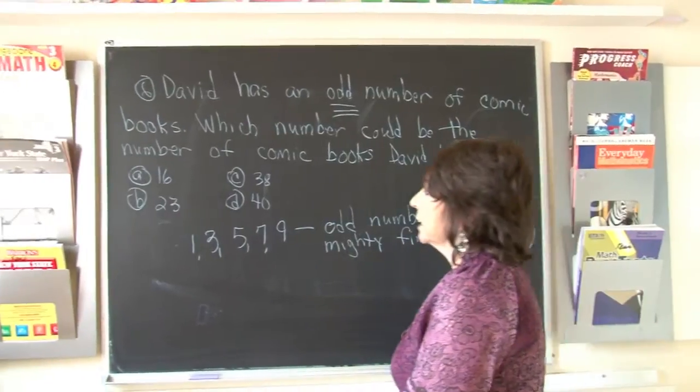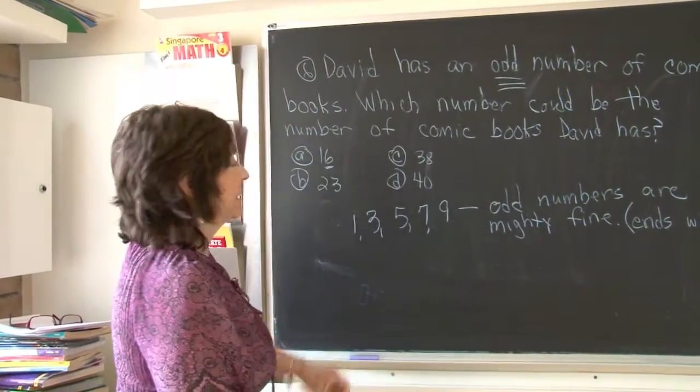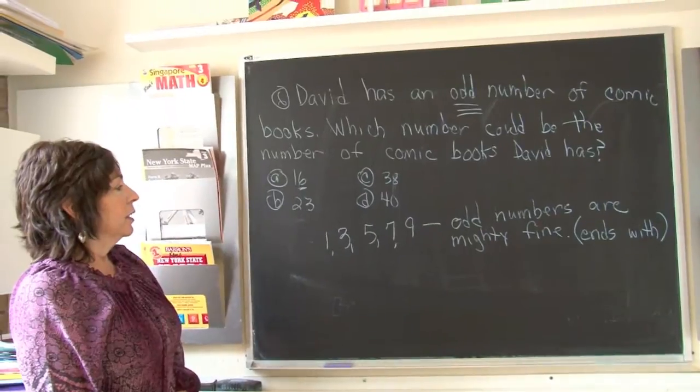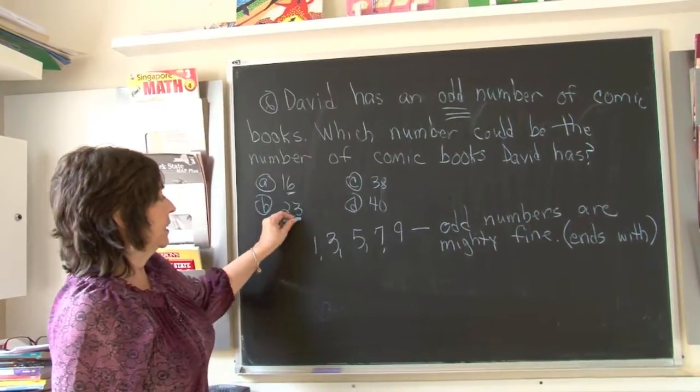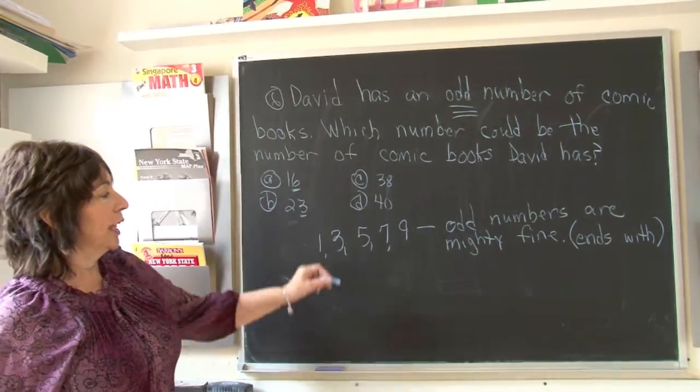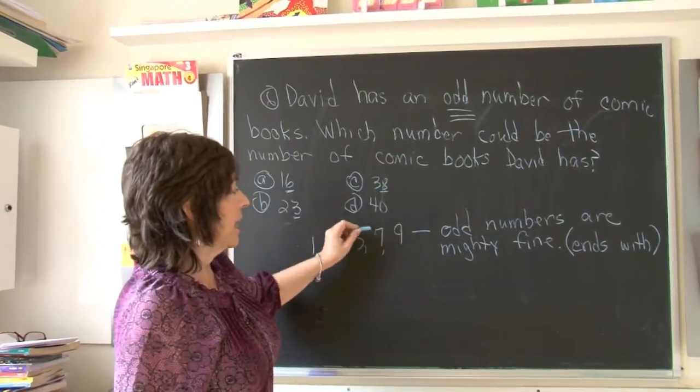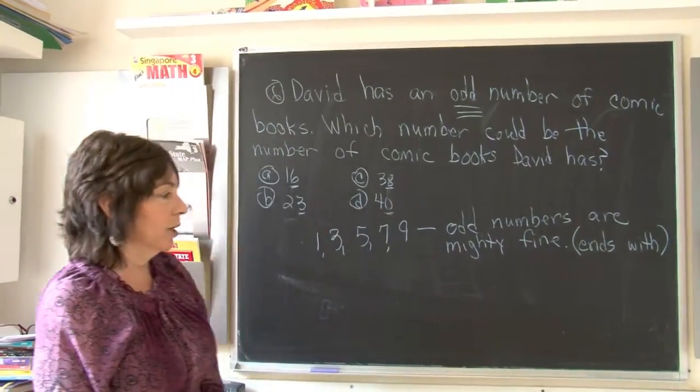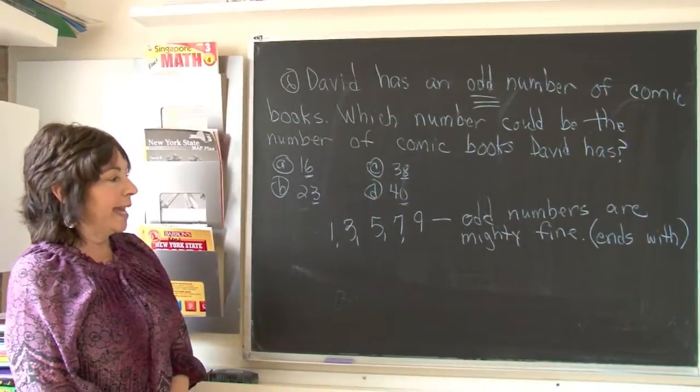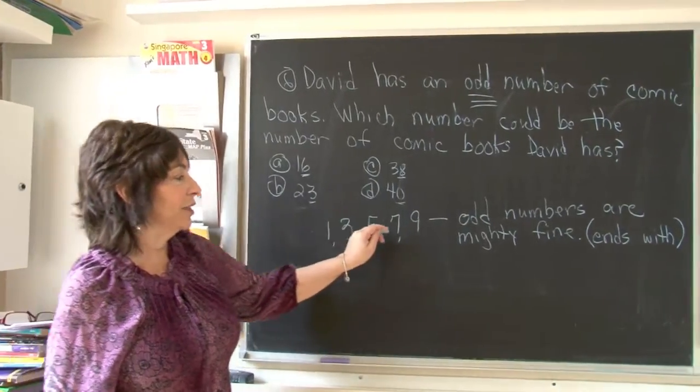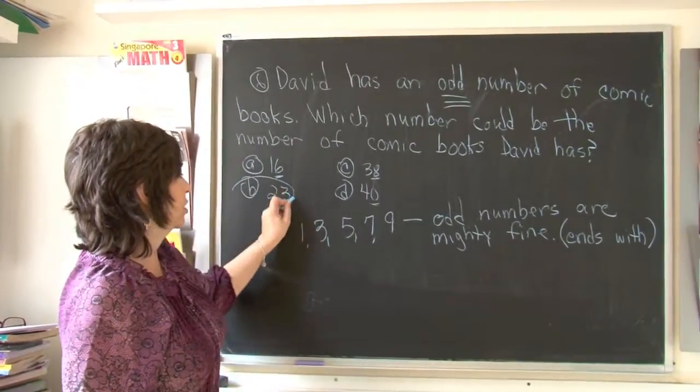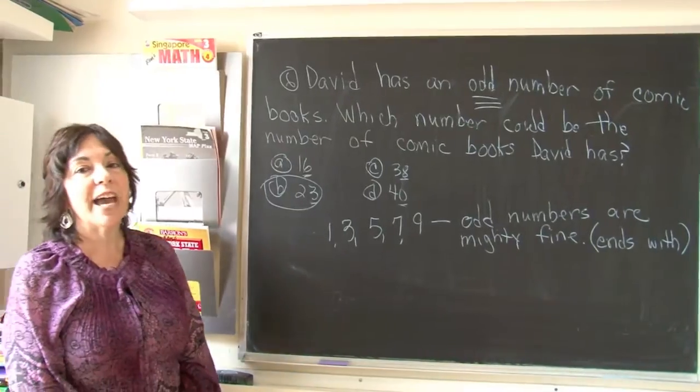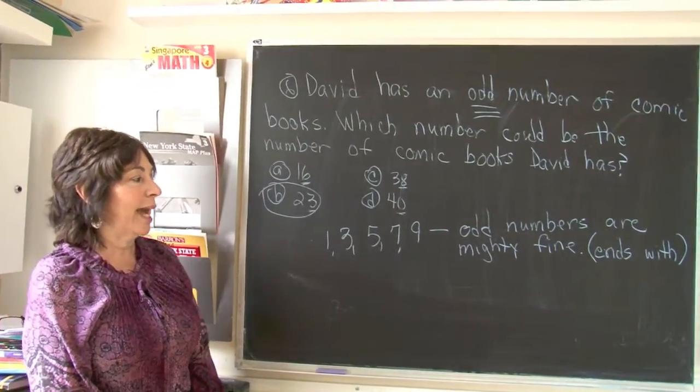So if that is the case, 16 ends in a six, 23 ends in a three, 38 ends in an eight, and 40 ends with a zero. So which number ended with a one, three, five, seven, and nine? Our answer is 23. And that is a very easy way for you to remember that.